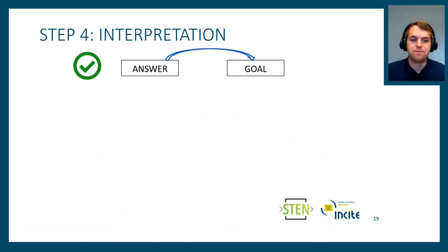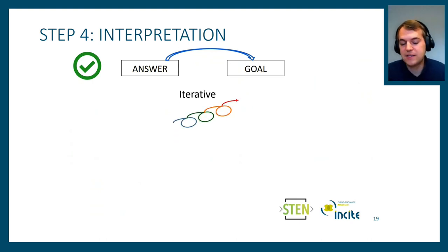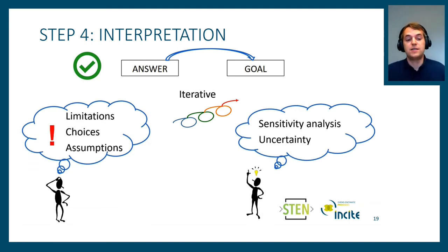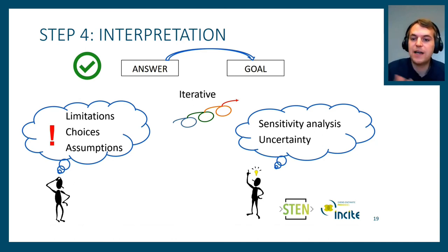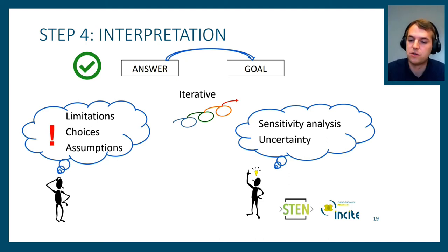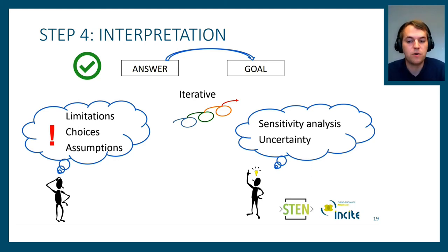The fourth and final step is interpretation. First we check if we answered the goal of our study — LCA is generally an iterative process, so we can improve data quality in subsequent cycles. Important considerations include which limitations, choices, and assumptions were made, and whether these allow a fair answer to our goal. Useful tools here are sensitivity analysis and uncertainty assessment, which help determine if results are reliable and if the limitations of the study are fair.